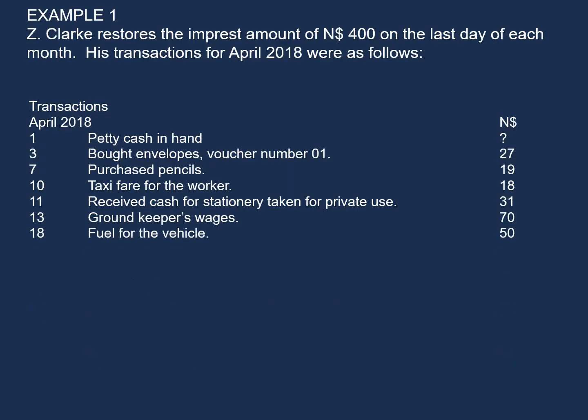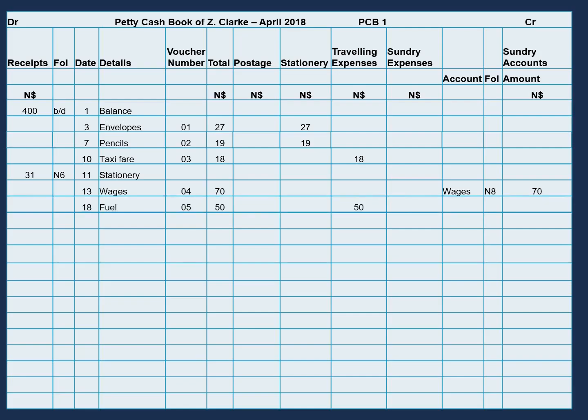On the 18th, fuel for the vehicle, $50. This will also be recorded on the credit side. On the 18th, fuel, we continue with our voucher number — 05. The total amount is $50, and we will classify this expense under traveling expenses.